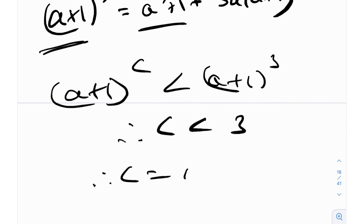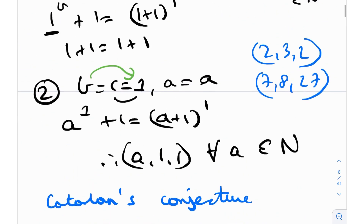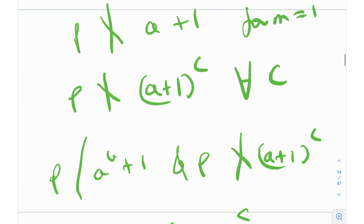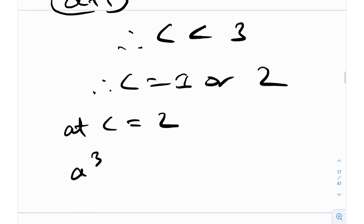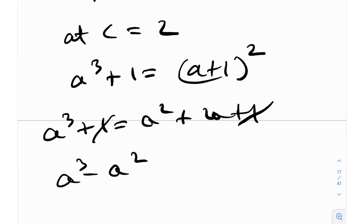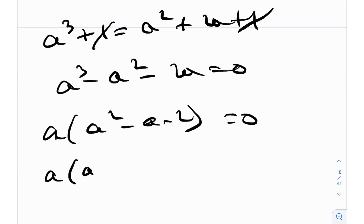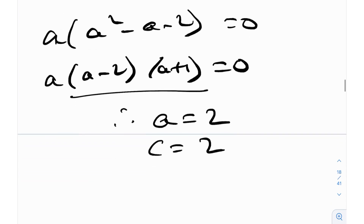Since c is a natural number and c < 3, we have c = 1 or c = 2. The case c = 1 has already been discussed as a trivial solution, so we only check c = 2. At c = 2: a³ + 1 = (a+1)² = a² + 2a + 1. Simplifying: a³ - a² - 2a = 0, so a(a² - a - 2) = 0, giving a(a-2)(a+1) = 0. Since a is a natural number, the only solution is a = 2. Therefore a = 2, c = 2, and b = 3.